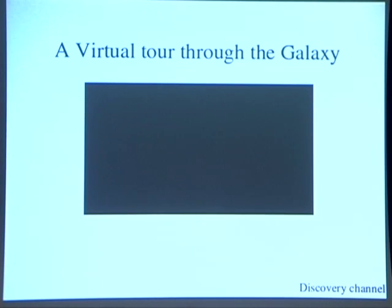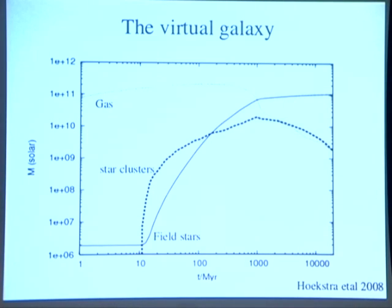This is why they need the scientists, right. Discovery Channel is just interested in the one thing in the center of the galaxy, and that's where we end up. But this is of course the holy grail of astrophysics: simulating the whole galaxy. The galaxy is about 10 billion years old, and it starts with gas — about 10^11 solar masses of gas. The gas turns into star clusters, and the star clusters fall apart and become the field stars.